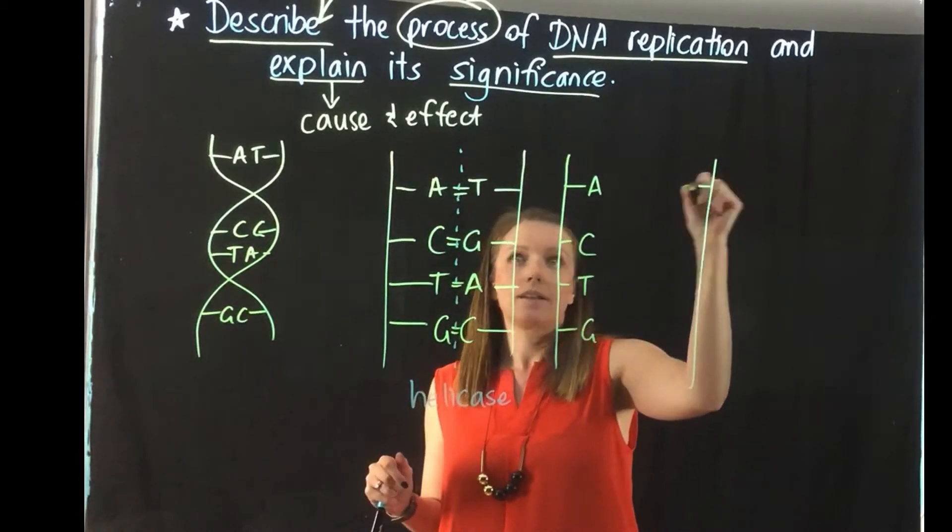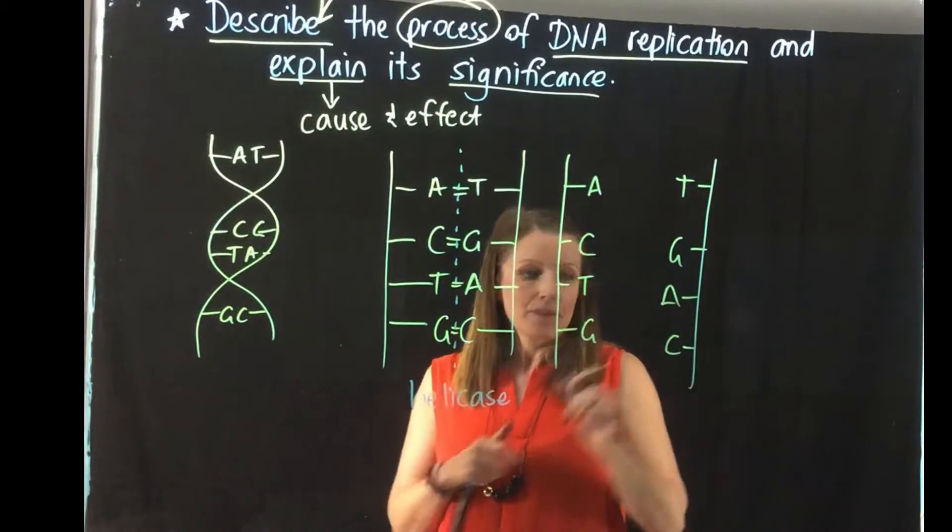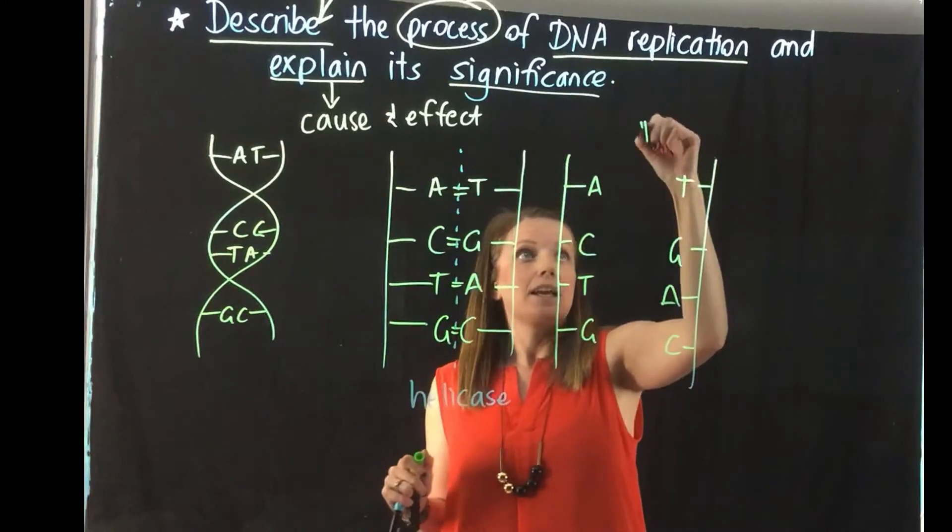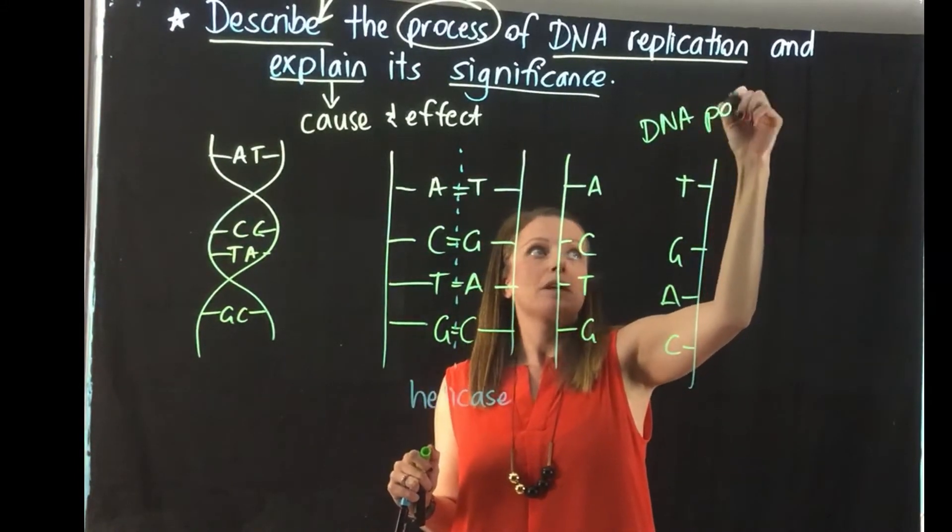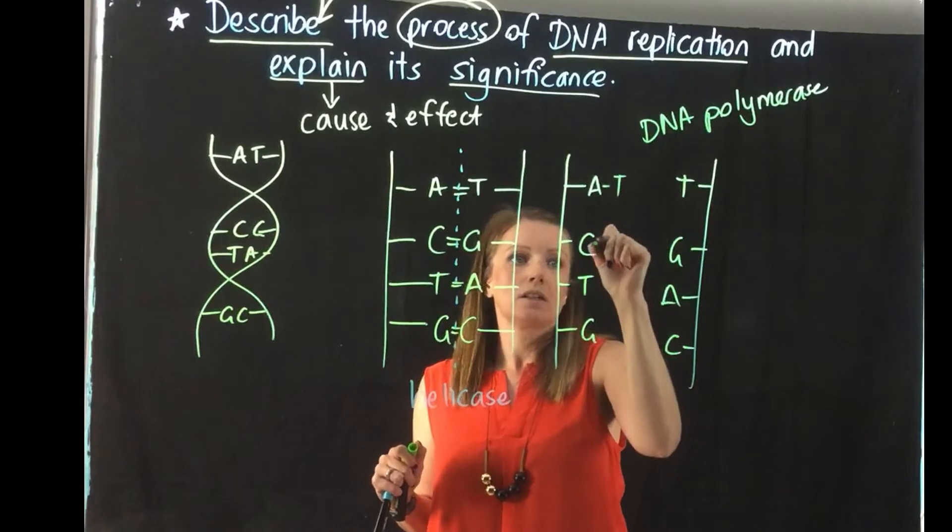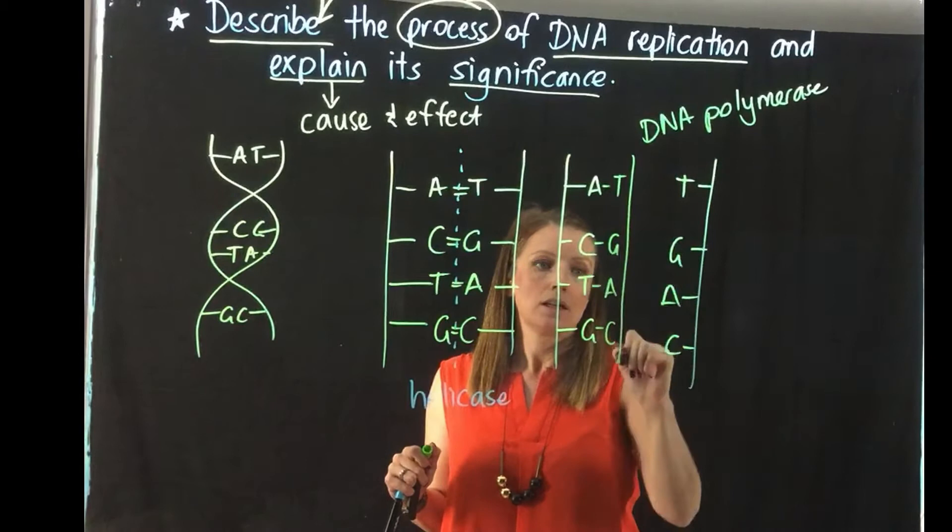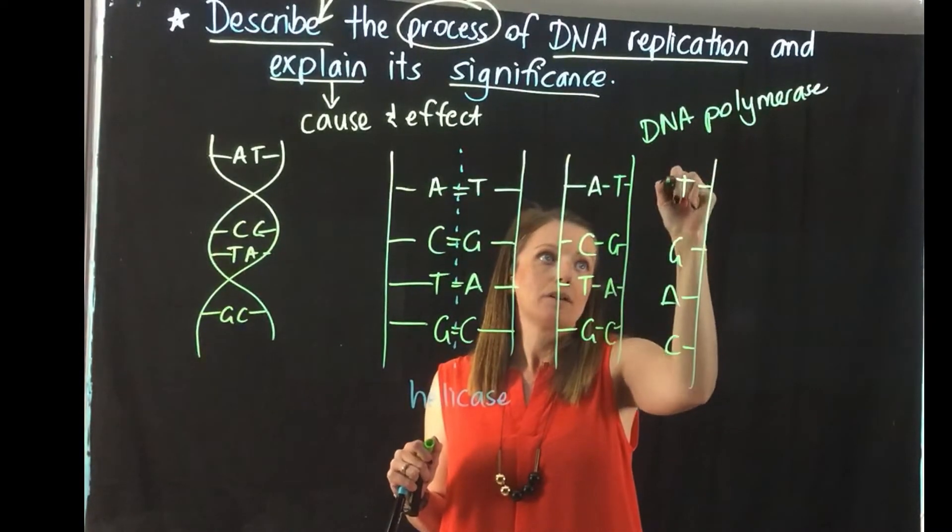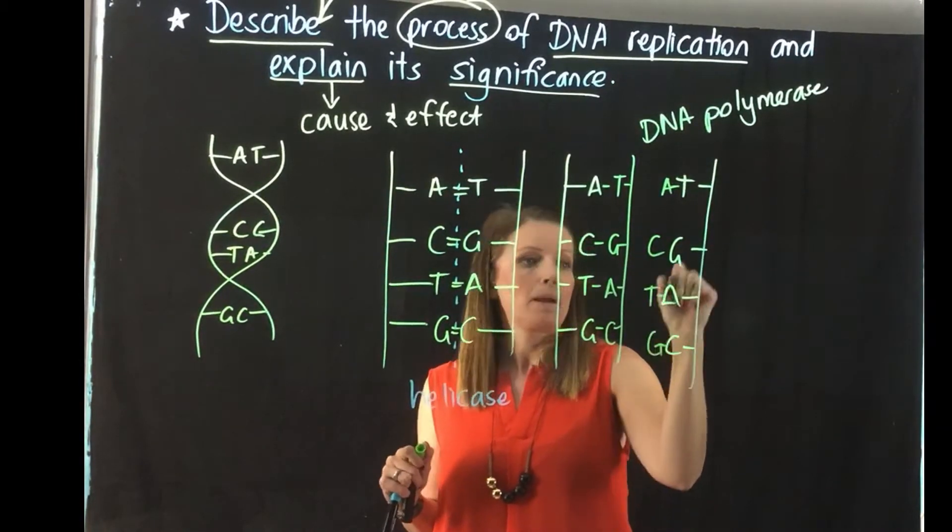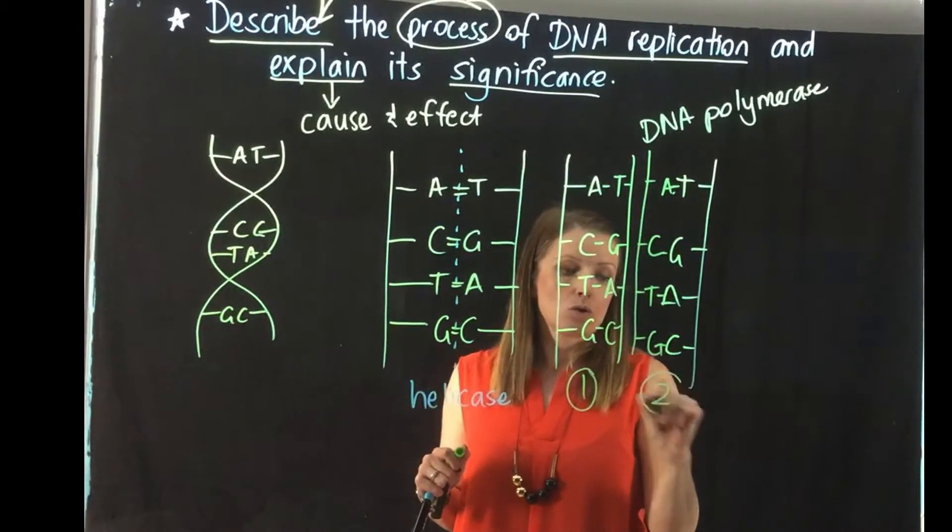Then the next thing we have happen is another enzyme called DNA polymerase comes in and brings in a new matching base to these free bases on our open strands. And as you can see, we now have our double strand of DNA being reformed, so now we have two strands of DNA.